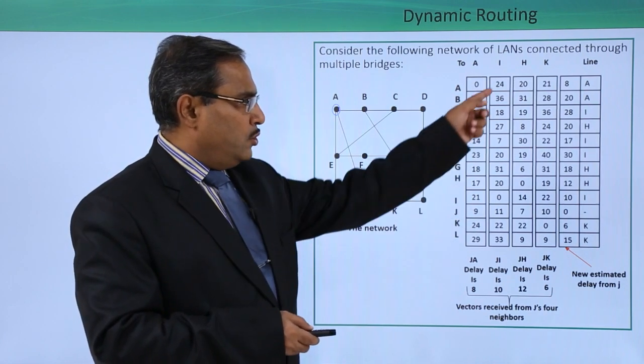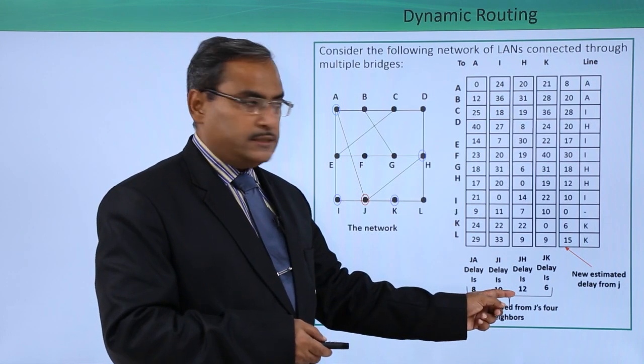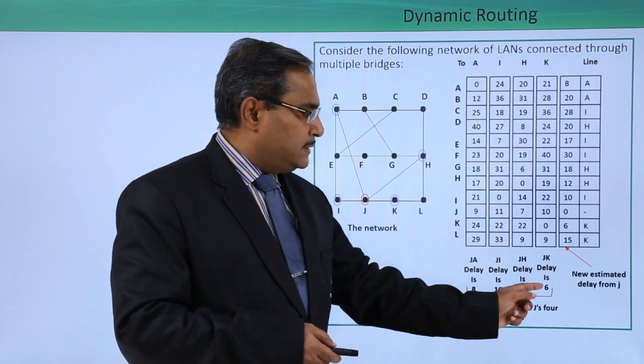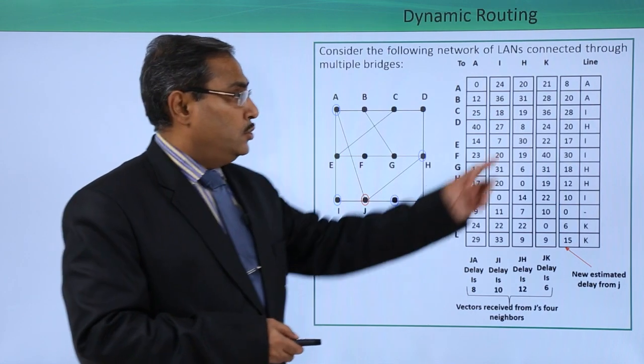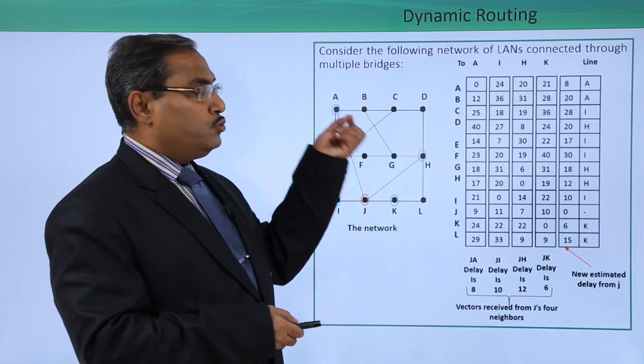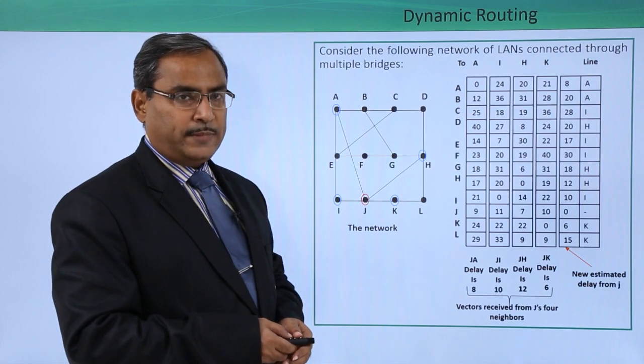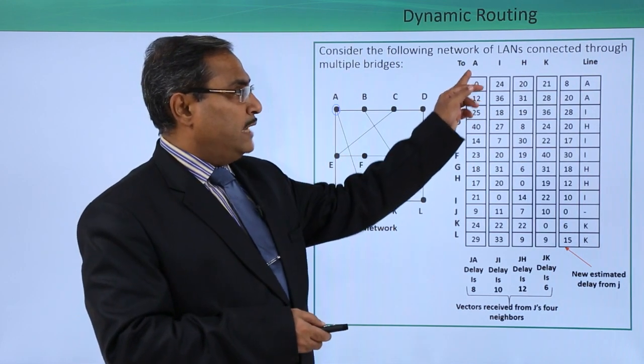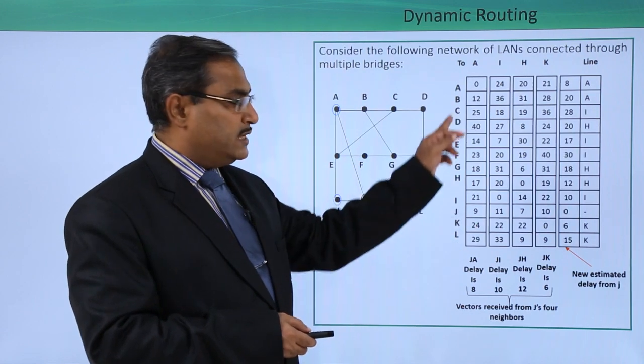So 0 plus 8 is 8, 24 plus 10 is 34, 20 plus 12 is 32, 21 plus 6 is 27. What is the minimum one? 8. So 8 through A bridge - that means J will go to A through A bridge and the delay time will be 8.